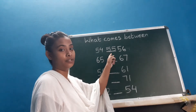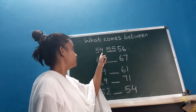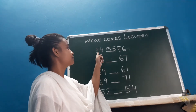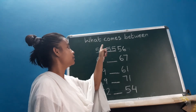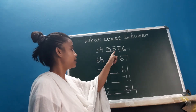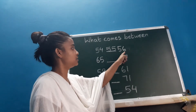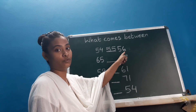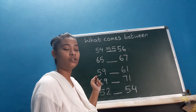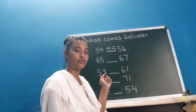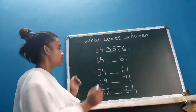55 was the missing number. 54, then the number is 55, and then 56. So 55 was the missing number. Now moving on to the next.